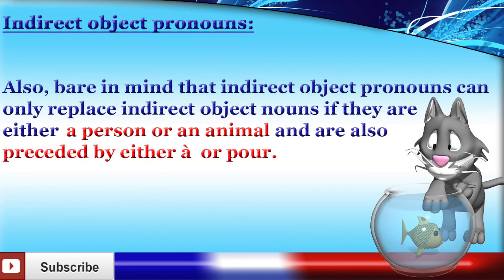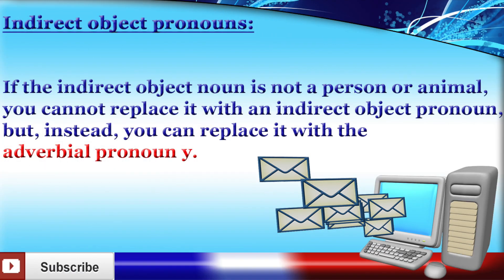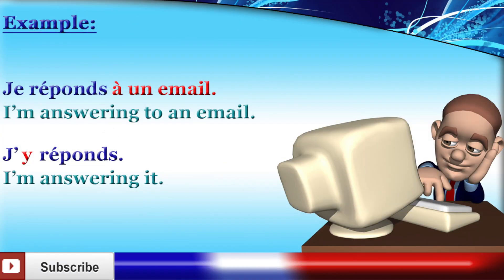Bear in mind that indirect object pronouns can only replace indirect object nouns if they refer to a person or an animal and are also preceded by the preposition à or the preposition pour. If the indirect object noun is not a person or an animal, you can't replace it with an indirect object pronoun, but instead you can replace it with the adverbial pronoun y. You'll be able to learn about this adverbial pronoun in the next lesson. For example, instead of saying je réponds à un e-mail — I'm answering an e-mail — you could say j'y réponds — I'm answering it — if the e-mail had already been mentioned.